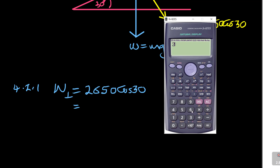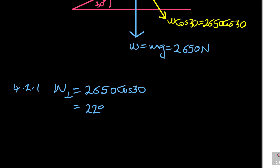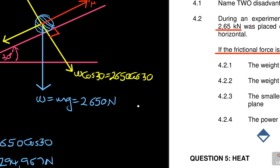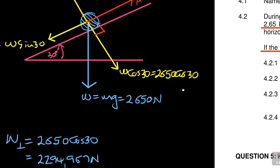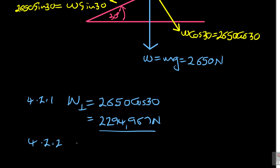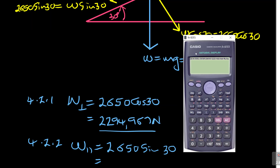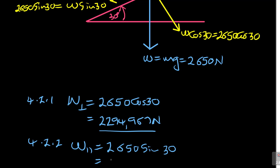That gives you 2,650 cos 30, which equals 2,294.97 newtons. Then question 4.2.2 asks for the weight component parallel to the plane. This is the W sin component. So weight component parallel equals 2,650 sin 30, which gives you 1,325 newtons. Don't forget the units — newtons.